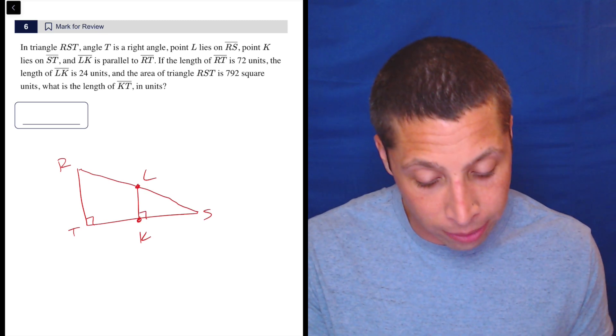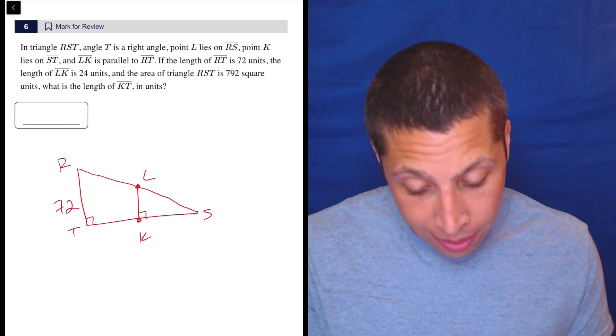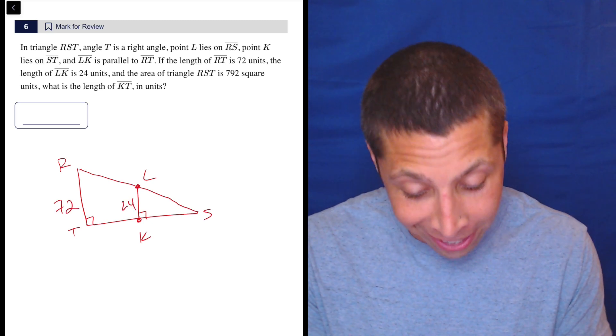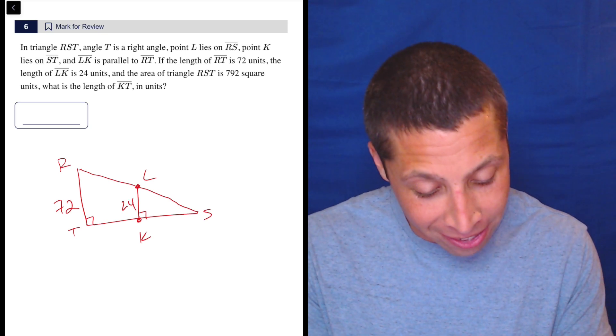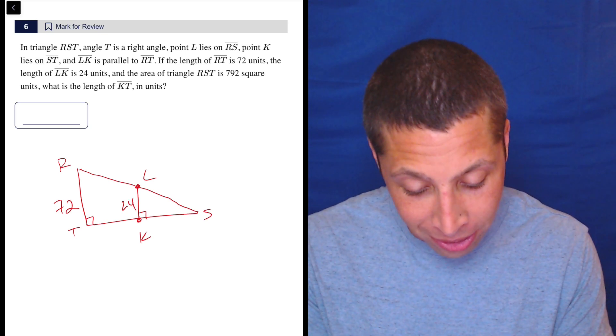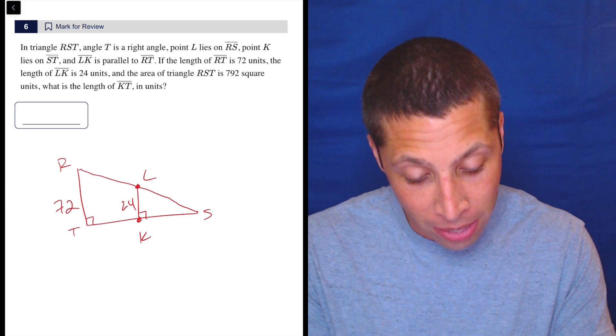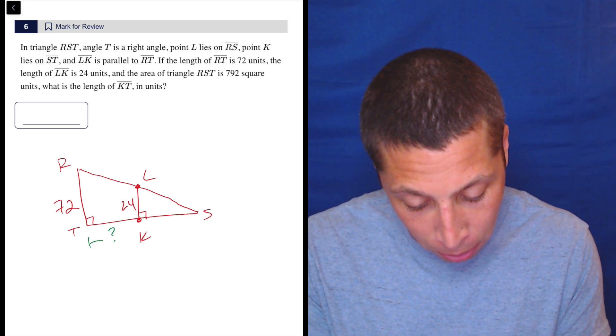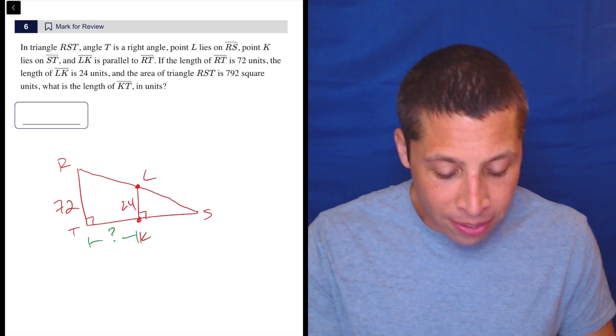If the length of RT is 72 units, so that goes there. The length of LK is 24 units, so that goes there. And the area of triangle RST, so that's the big triangle, is 792 square units. What is the length of KT in units? So, oh my goodness. Okay, so we're looking for, I'm going to change the color here, this KT part. Okay, so yeah, this is annoying.